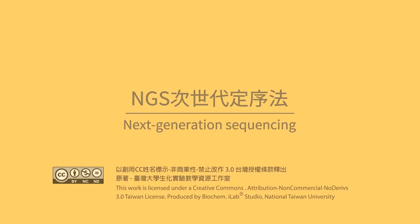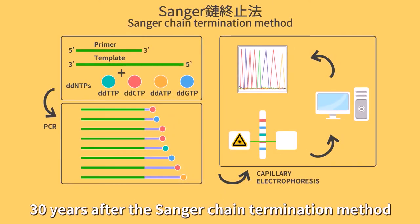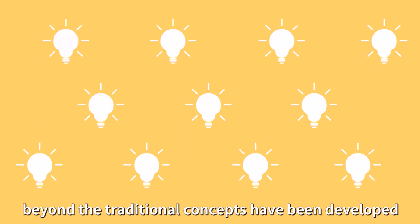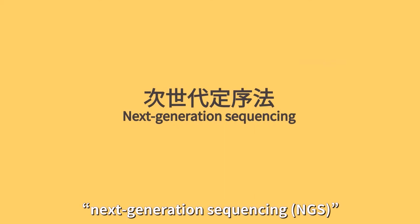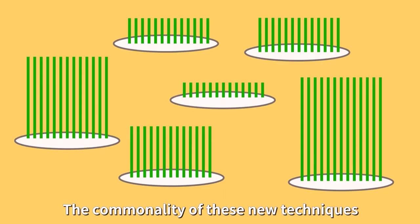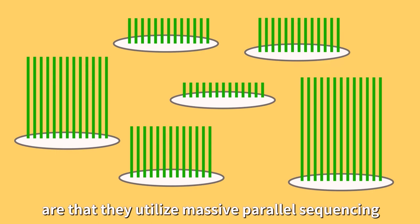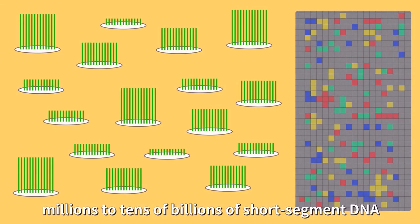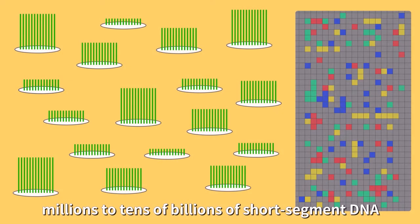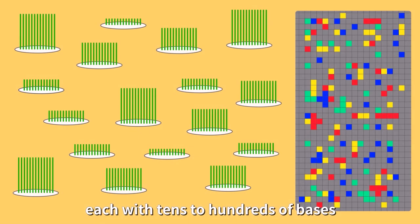Next Generation Sequencing. 30 years after the single chain termination method was discovered, many new sequencing techniques beyond traditional concepts have been developed, collectively referred to as Next Generation Sequencing. The commonality of these new techniques is that they utilize massive parallel sequencing to simultaneously process millions to tens of billions of short-segment DNA, each with tens to hundreds of bases.